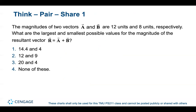Consider two vectors A and B with magnitudes 12 and 8 units respectively. The largest possible magnitude of the resultant R = A + B is 20 — when they point in exactly the same direction. The smallest is 12 − 8 = 4 — when they point in exactly opposite directions.